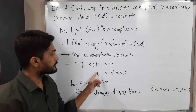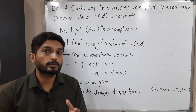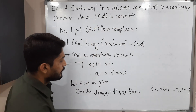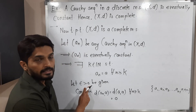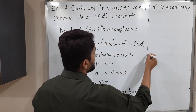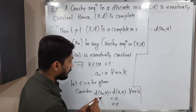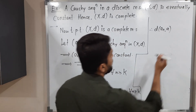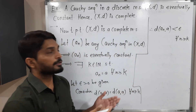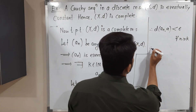The condition holds for n ≥ k, so d(a_n, a) = d(a, a). Since both points are same, by the definition of discrete metric the distance is 0. And 0 is obviously less than epsilon. Therefore d(a_n, a) < epsilon for all n ≥ k. This is exactly the definition of a convergent sequence: d(a_n, a) < epsilon for all n ≥ capital k.